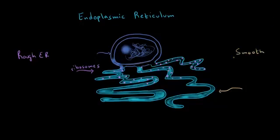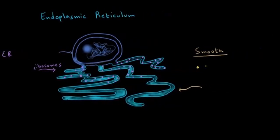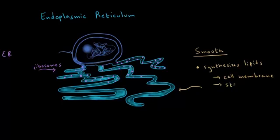Let's start with the smooth endoplasmic reticulum first. So what does it do? The smooth endoplasmic reticulum synthesizes lipids, including those that will end up being part of the cell membrane, and those that are secreted from the cell — for example, steroid hormones. The smooth endoplasmic reticulum also metabolizes carbohydrates, and it also aids in the detoxification of drugs and other toxins.